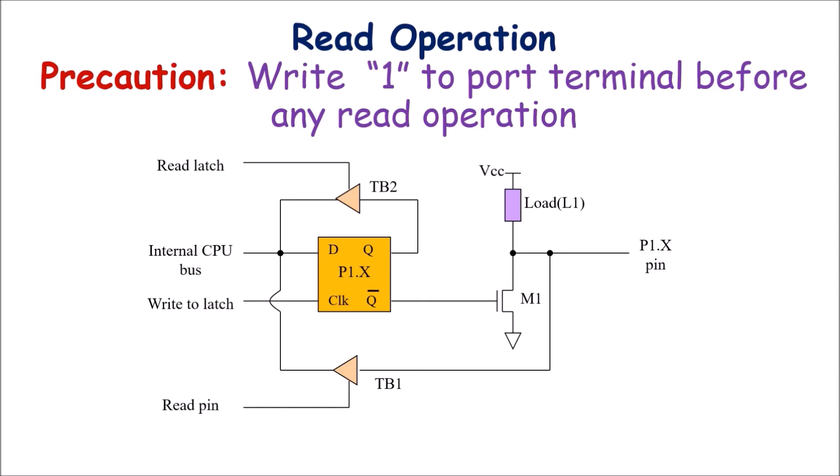Now let us understand the read operation at each port terminal. Before performing any read operation, logic 1 must first be written at the port terminal. For example, before reading data from port 1, if using P1.0, use the instruction 'SETB P1.0'. If using the full P1 port as a read port, use the instruction 'MOV P1, #0FFH'. This sets all port 1 pins to logic 1, and then only can you perform a read operation.